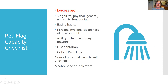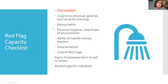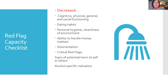What are some red flag capacity indicators? They may show a decrease in cognitive ability, physical and social functioning, and eating habits. Personal hygiene may start to suffer, as well as cleanliness in their environment and the ability to handle money. They may seem disoriented at times. Critical red flags include behavior issues potentially harmful to themselves or others, or alcohol-specific indicators that may not have been identified previously.